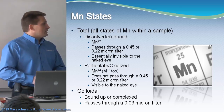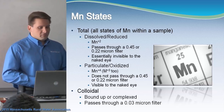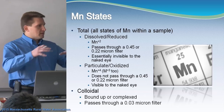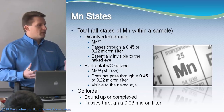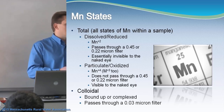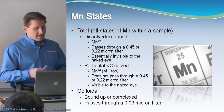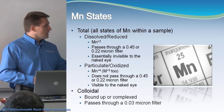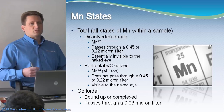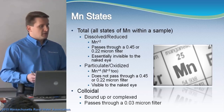Colloidal is another state of manganese that's important when it comes to treatment because it makes it very difficult to remove. Colloidal manganese is basically bound up or held in place by an organic — like natural colors in your water, leaves, humic substances. That makes it very difficult to remove. It can actually pass through a 0.03 micron filter, an even smaller filter, which tells you that at that state it's very hard to remove.